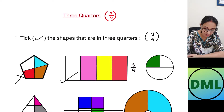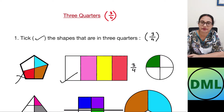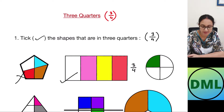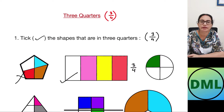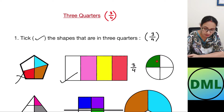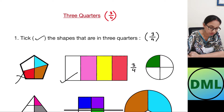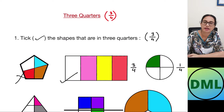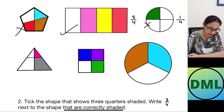Let's see the next figure — this is the circle triangle I have. How many parts has it been divided into? One, two, three, and four parts. Are the parts equal? Yes, all the parts are equal. But how many parts are shaded? Only one part is shaded. So this shape is one by four — this is not my answer.